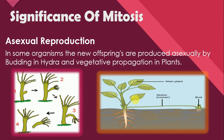Many plants also reproduce asexually by vegetative propagation. Vegetative propagation means that sex organs are not involved in reproduction; instead, vegetative parts of the plant body — like leaves, roots, rhizome, stem, and bulbs — carry out reproduction. For example, a small bud on a plant can develop into a complete mature plant similar to the parent plant, and this is possible because of mitosis.